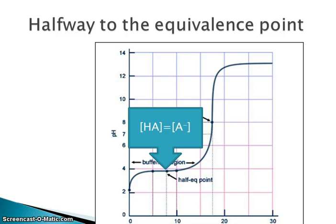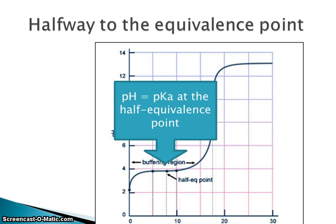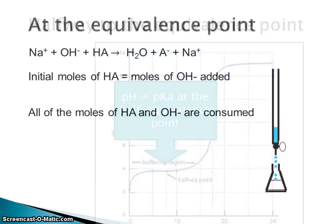When we're halfway to the equivalence point — where I've added half as many moles of hydroxide as initial moles of HA — there's a special relationship at the half-equivalence point: the concentration of unreacted HA equals the concentration of A⁻ conjugate base produced. This means at the half-equivalence point, the pH equals the pKa of the weak acid. You can measure the pH at this point to get the pKa and find the equilibrium constant of the weak acid.